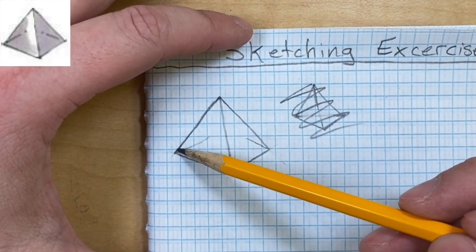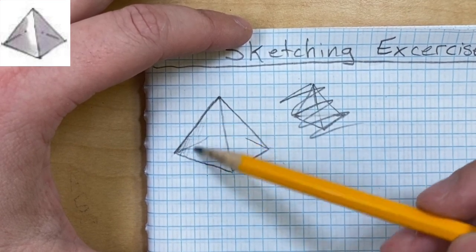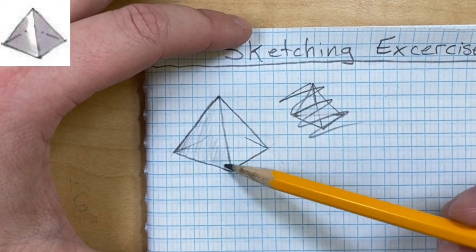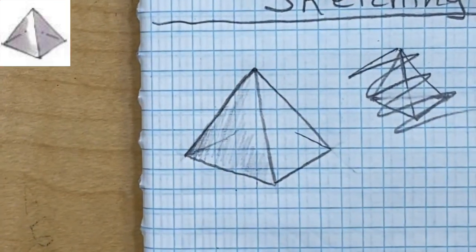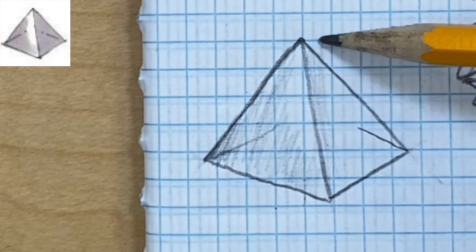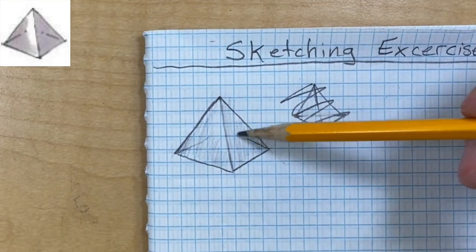Now I'm going to take my pencil and I'm going to start roughly going back and forth across my triangle there and trying to fill in that space. You want to be light and you want to try to keep them inside the lines as best as possible.